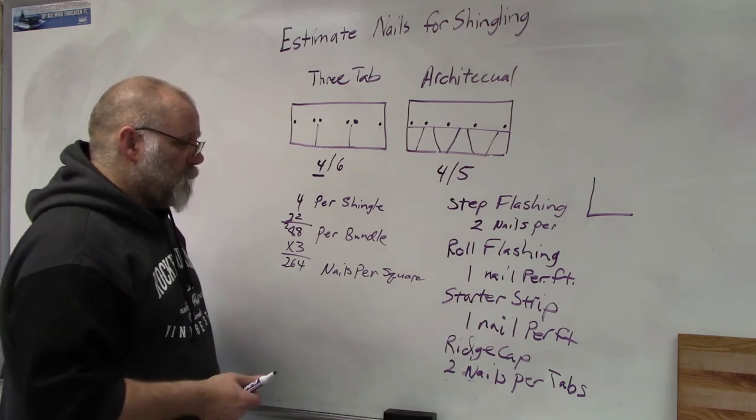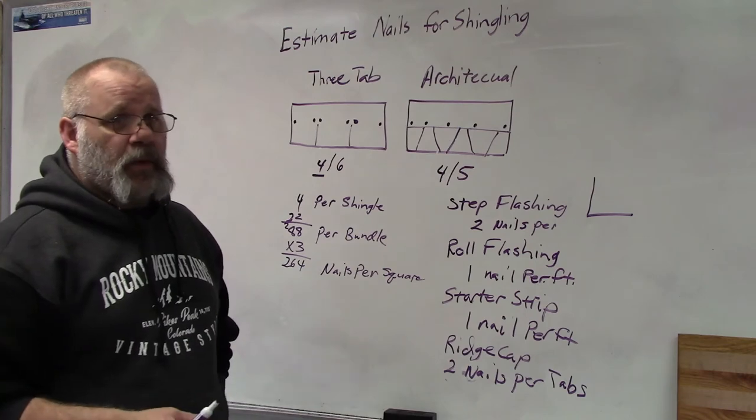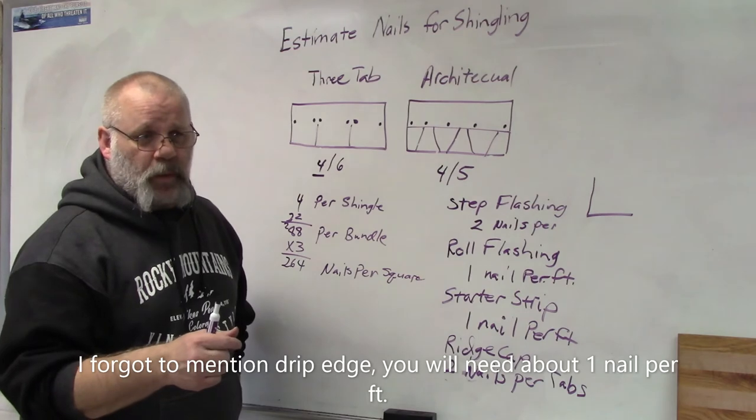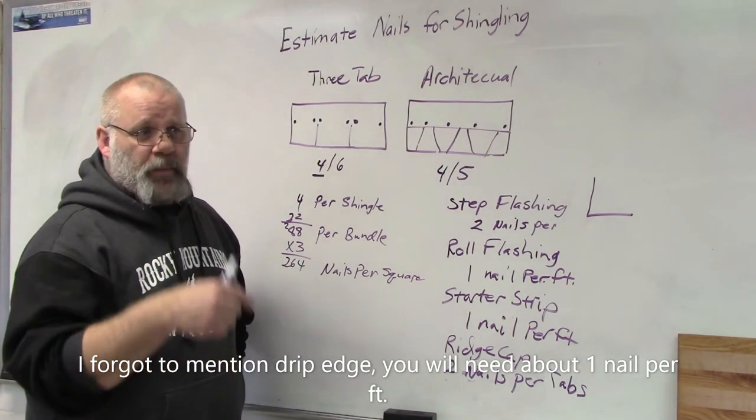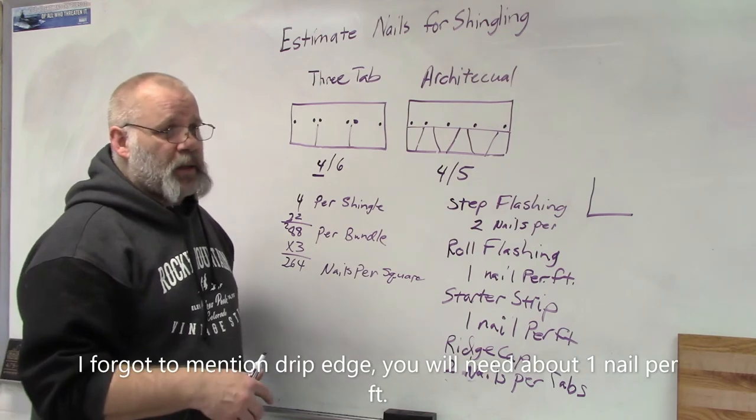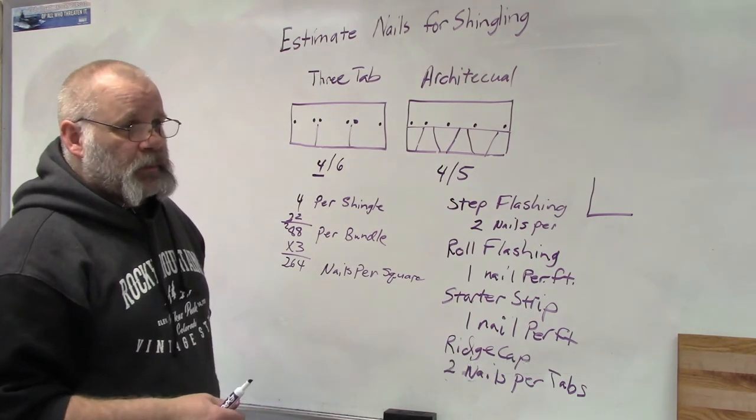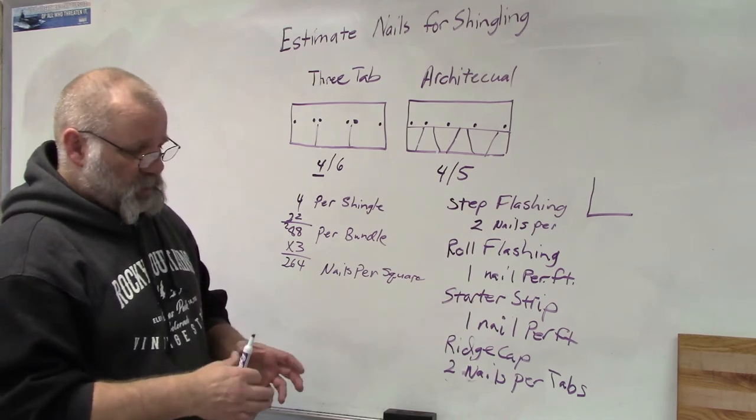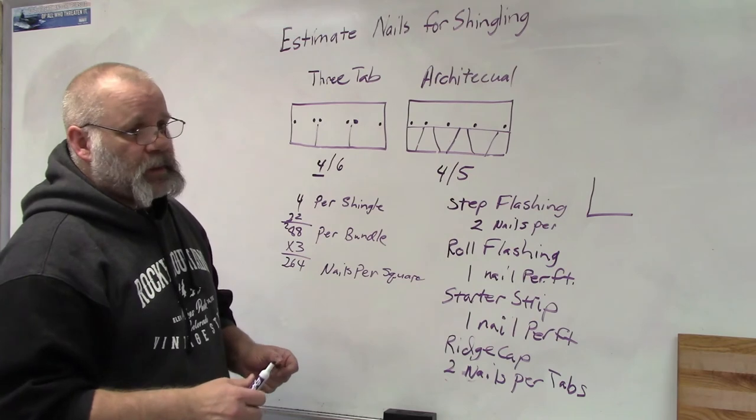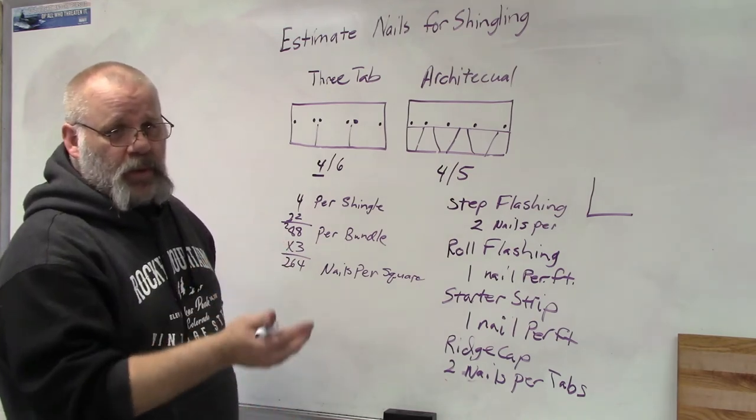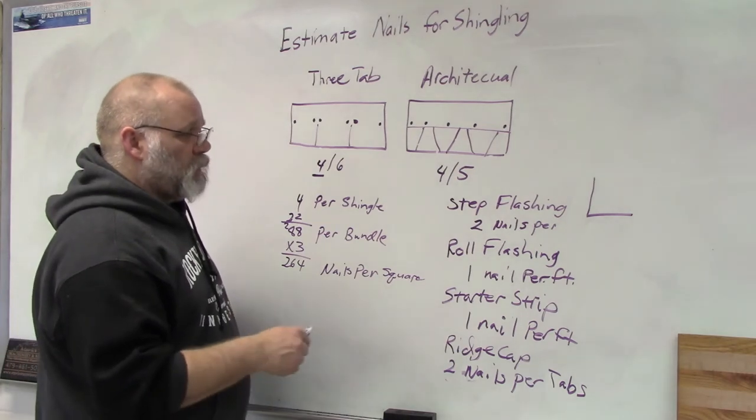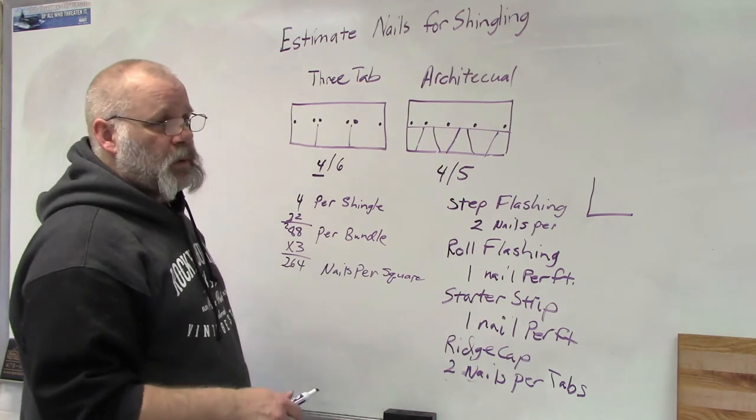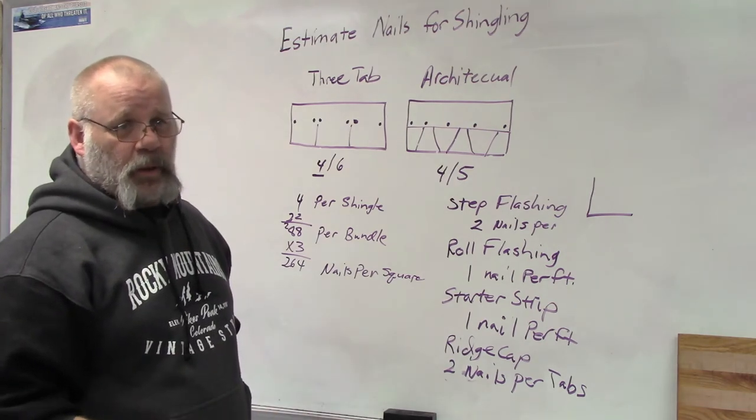Okay, other places you're going to use nails: if you have exhaust pipes from your vent pipes from your bathrooms coming up through the roof, you're going to need a few nails for that. You're going to need nails for other air vents that come up through your roof. If you're going to put on a ridge vent, then you would have to estimate for the number of nails for a ridge vent, but those would have to be longer.